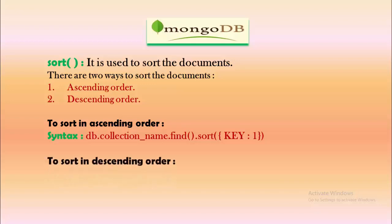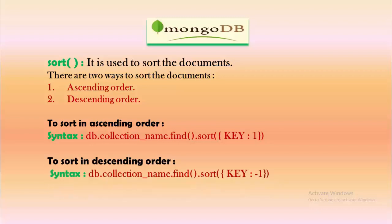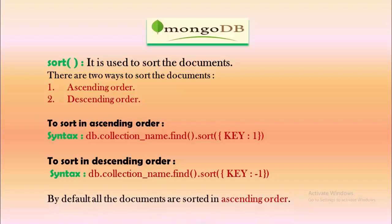To sort documents in descending order, the syntax is db.collectionName.find().sort(), but this time instead of 1, we specify the value as -1 to sort documents in descending order according to the key. By default, all documents are sorted in ascending order if we do not specify a key value of 1 or -1.